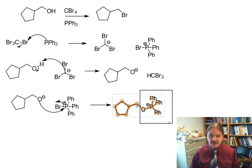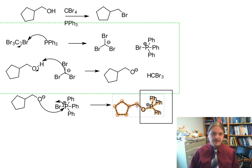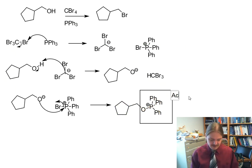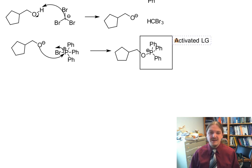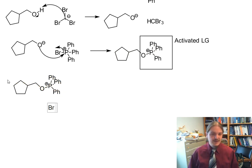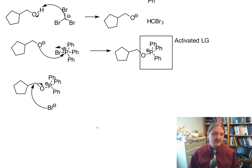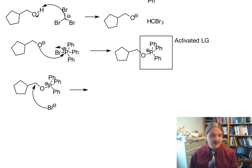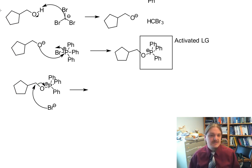Now I have something that looks like an activated leaving group, which is the whole point of any of these reactions on alcohols — to activate that alcohol as some kind of better leaving group. Left over from this previous SN2 step is a bromide anion, which is a nucleophile that can attack at that carbon, and we have one last SN2 reaction. A lot of people draw the arrow to show that these electron pairs go over and form a new oxygen-phosphorus double bond.